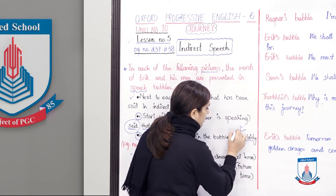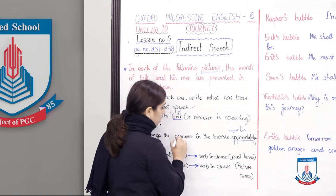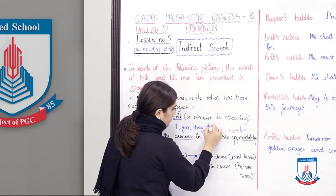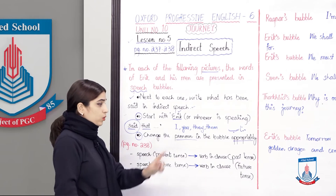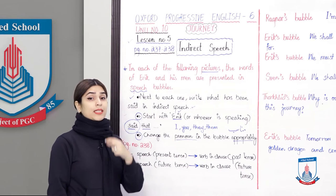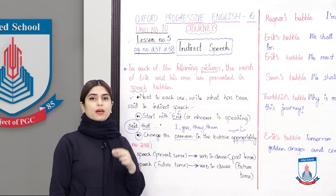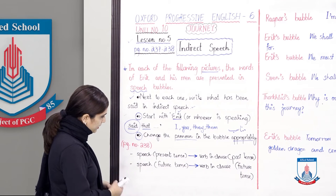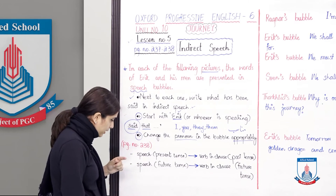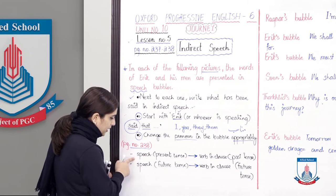What do you need to do when you look at the pronoun change? Pronouns like I, you, they, them — what do we need to change? If we have to change the pronoun to plural, we will use them. If we have to change the pronoun to singular, we will use singular pronouns: I and you. These are all grammar rules. And the rest of the sentences we have written in the past tense.